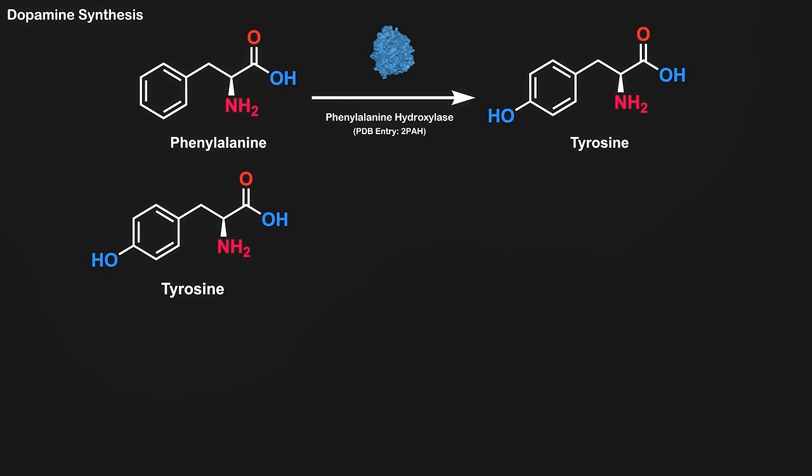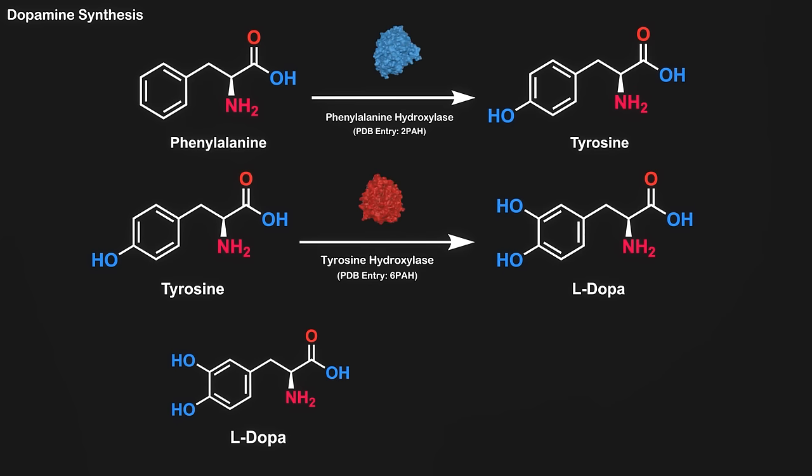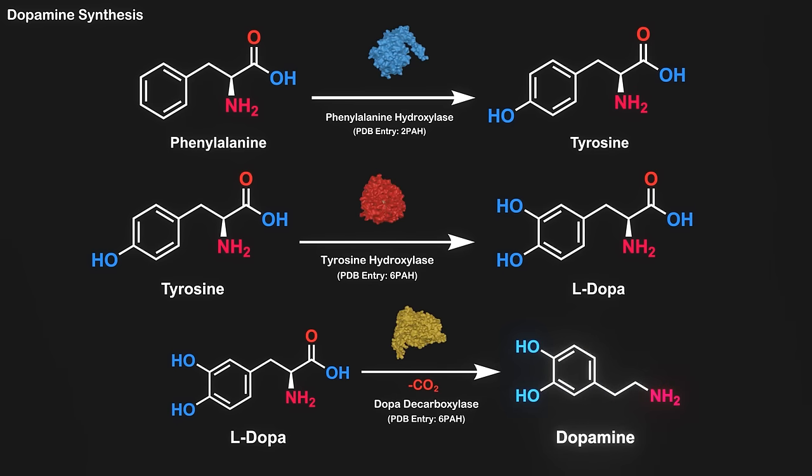Tyrosine is then converted through tyrosine hydroxylase, TAH, which forms L-DOPA. L-DOPA is then able to undergo a decarboxylation from the enzyme DOPA decarboxylase, which results in the formation of dopamine. So if that went over your head, just to summarize briefly, dopamine is made in the body, starting from the essential amino acid phenylalanine.